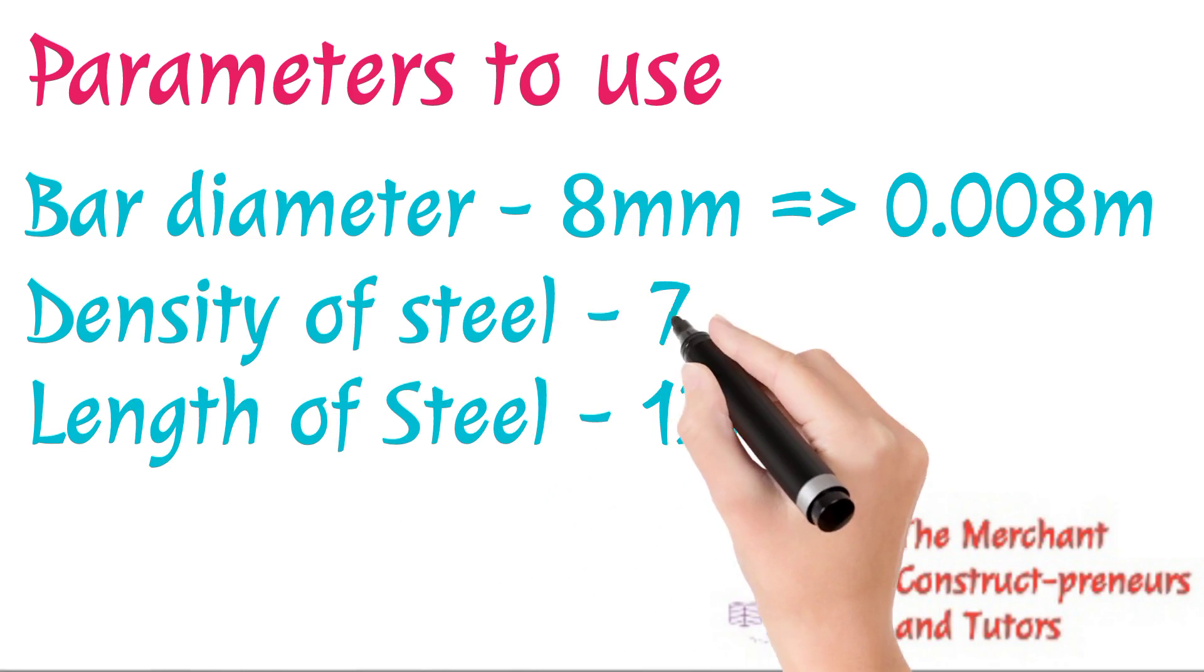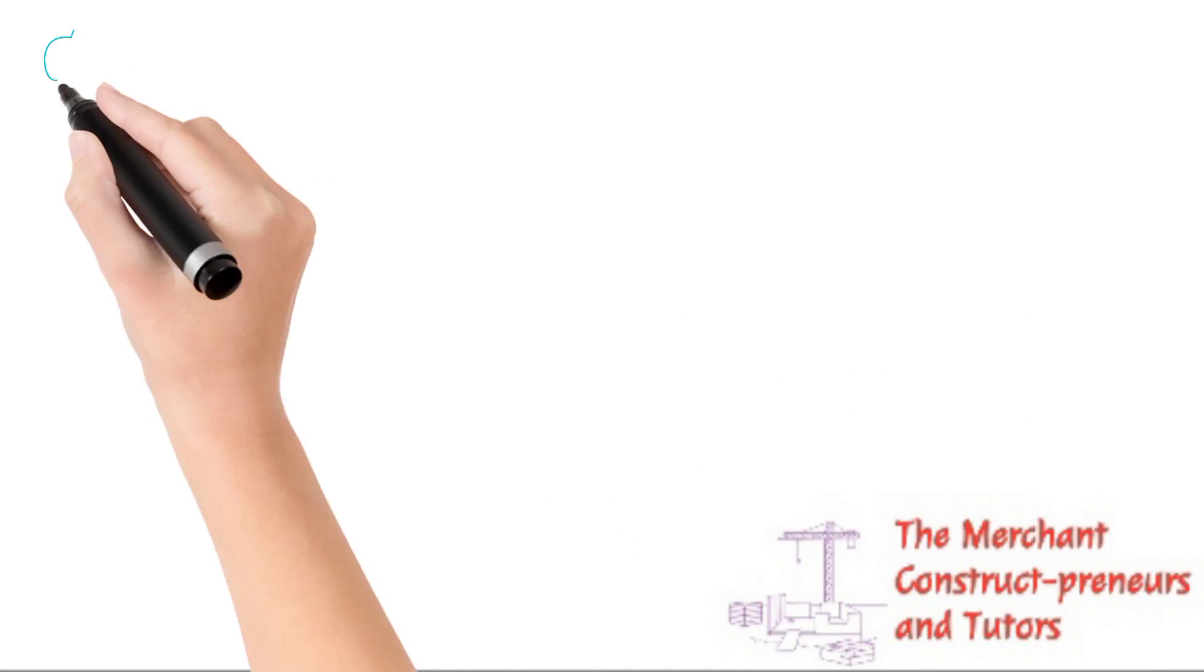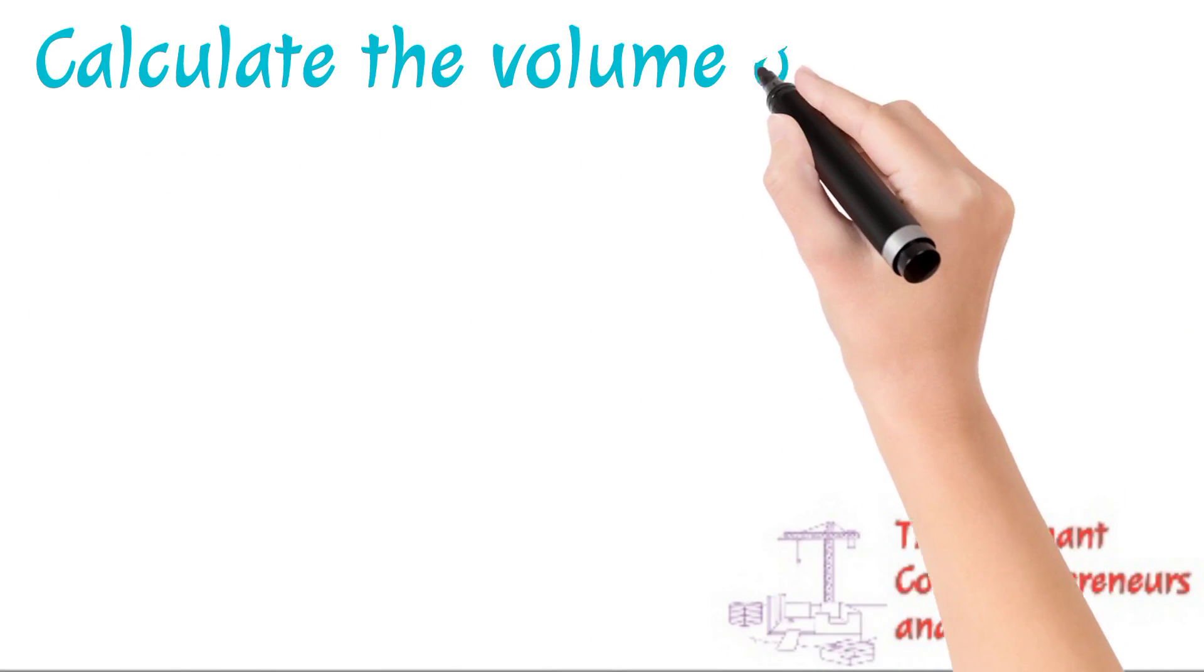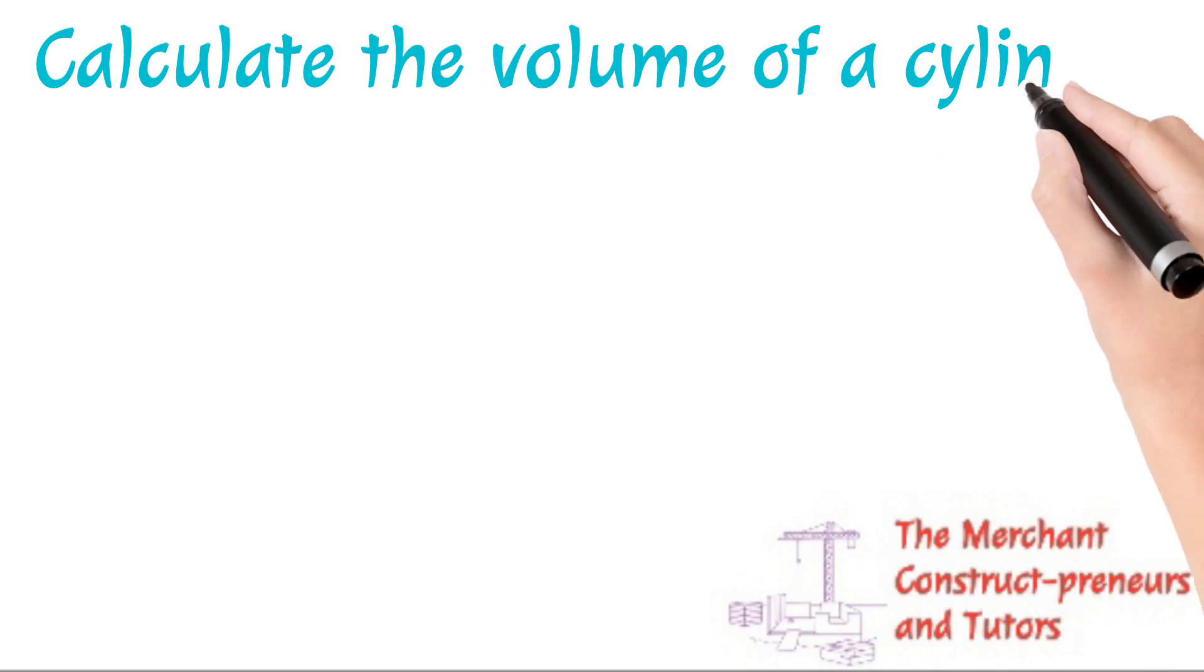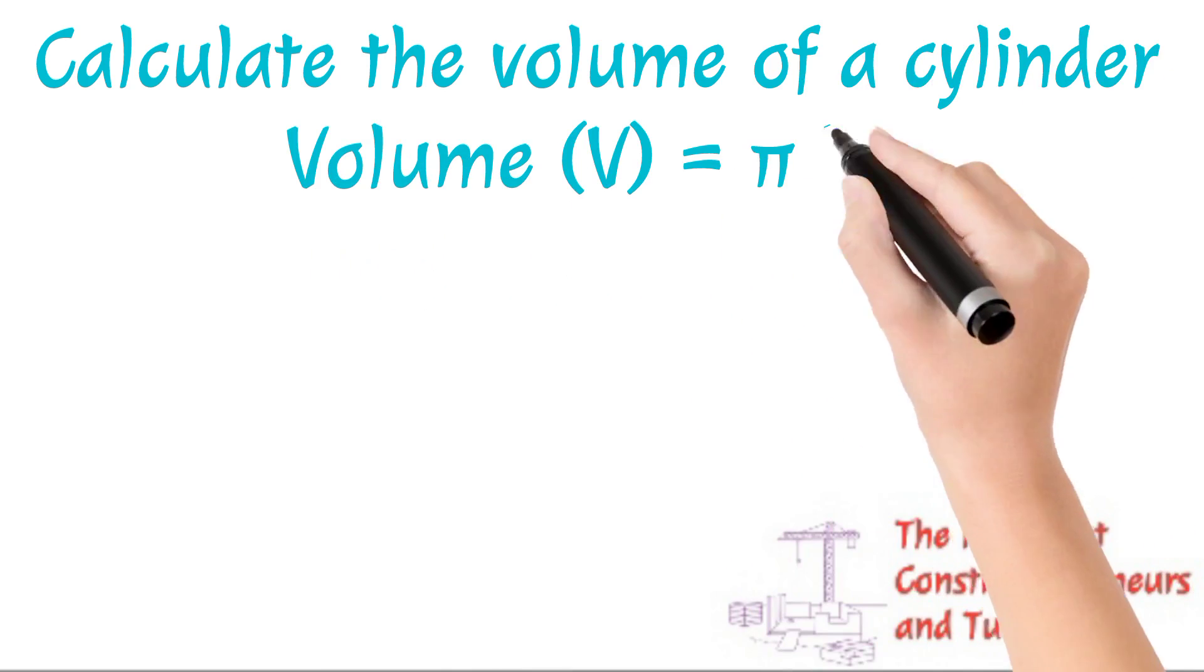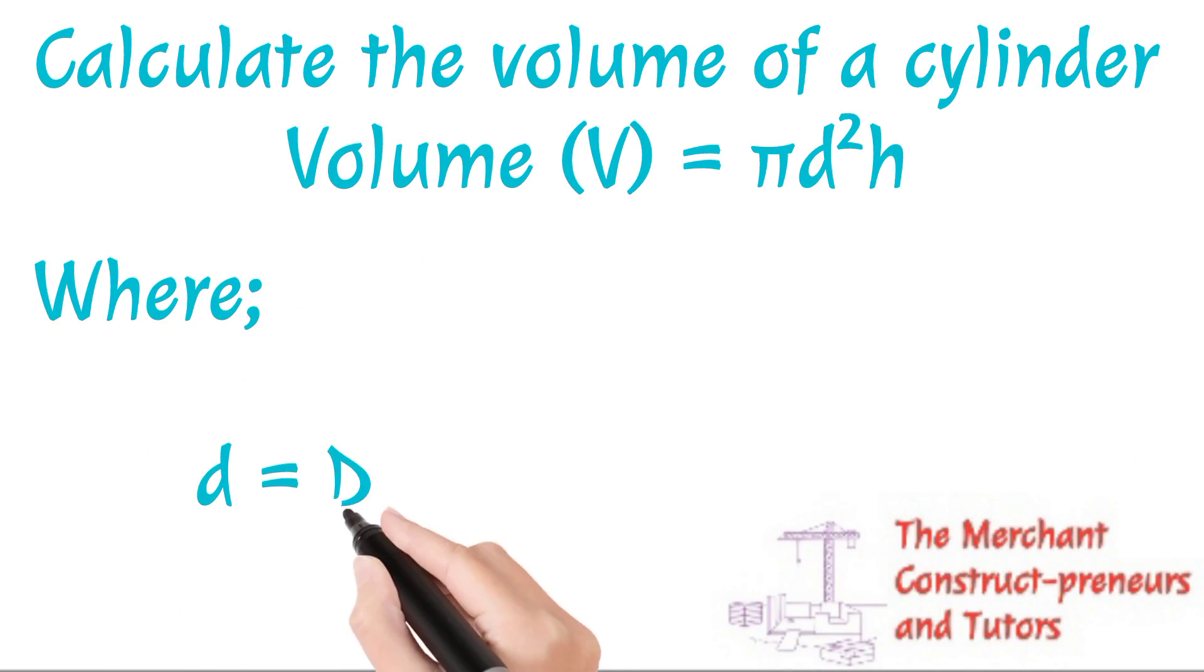So the bar diameter we have is 8 millimeters, and converting it to meters we have the value 0.008. The density of steel is 7900 kilograms per meter cubed. Then the length of steel is 12 meters. So when you buy from the manufacturer, the length of steel is 12 meters, so we are using this as our calculation parameters.